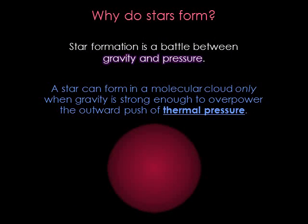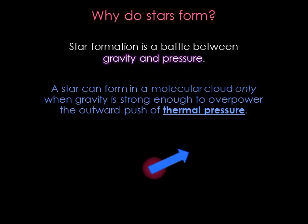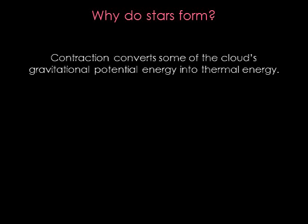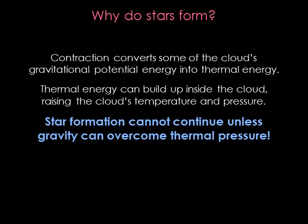Now that we can see star formation, it makes sense to ask why it is happening. Stars form when gravity causes a molecular cloud to contract, and the contraction continues until the central object becomes hot enough to sustain nuclear fusion. But gravity can create stars only if it can overcome the outward push of thermal pressure within the gas cloud. As the cloud shrinks, thermal pressure gets larger, like squeezing a balloon. The gravitational contraction also converts some of the cloud's gravitational potential energy into thermal energy. If the cloud cannot get rid of that thermal energy quickly, it builds up inside the cloud, raising the temperature and thermal pressure, and eventually bringing star formation to a halt.